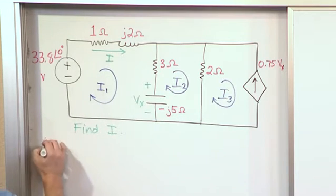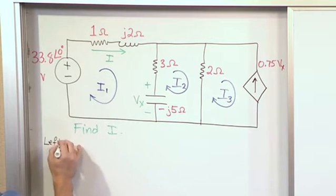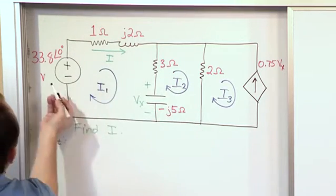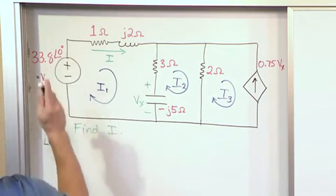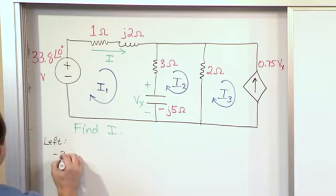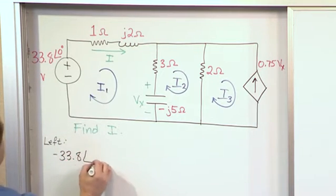So let's go ahead and start by writing the left-hand mesh equation, which means this left mesh right here. So we're going to walk around clockwise like this. We're going to first hit this guy. This is a voltage rise, so it's going to be negative 33.8 at an angle of zero degrees.